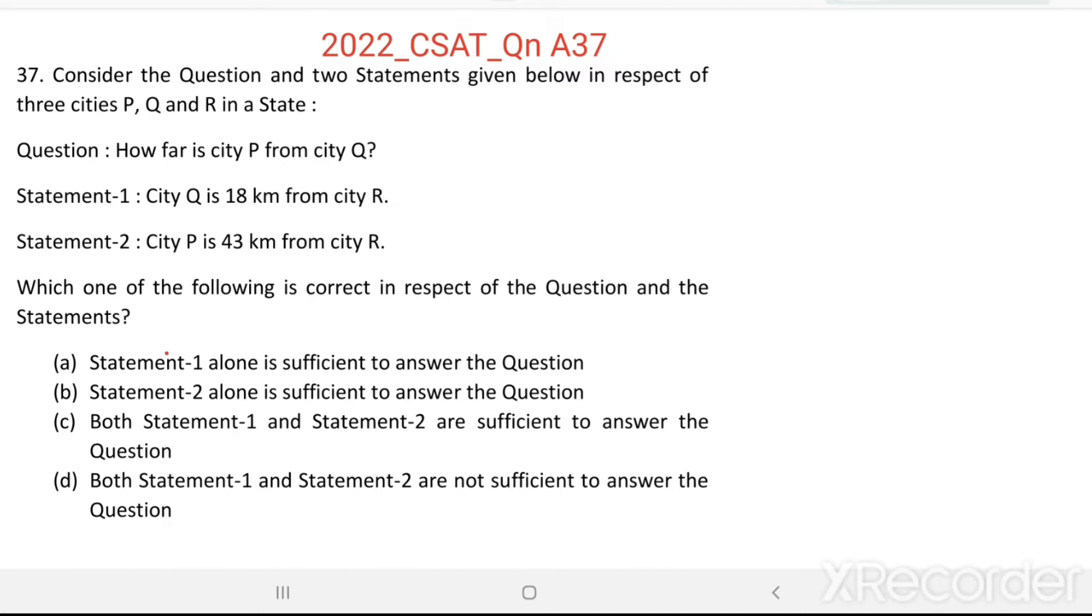Statement 1: City Q is 18 km from city R. Statement 2: City P is 43 km from city R. Which one of the following is correct in respect of the question and the statements?